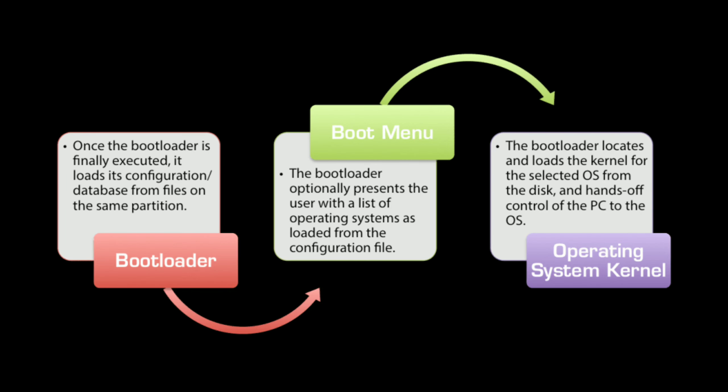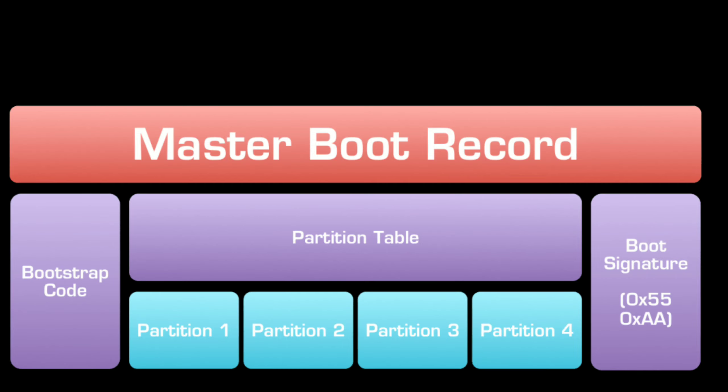MBR uses a boot sector. One boot sector is 512 bytes. MBR is an old partition table. In MBR, there is a primary partition — we can create up to three primary partitions and one extended partition.